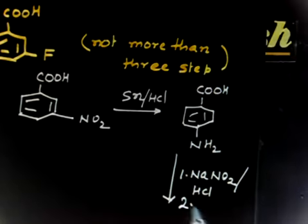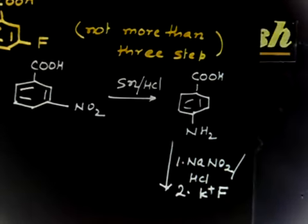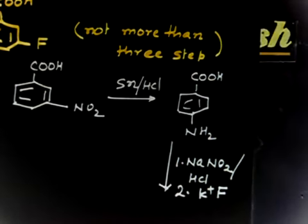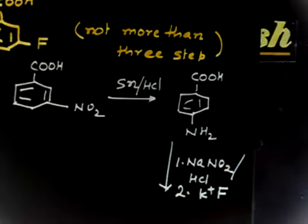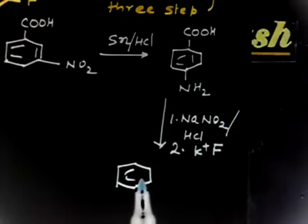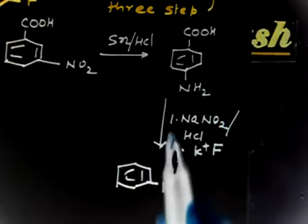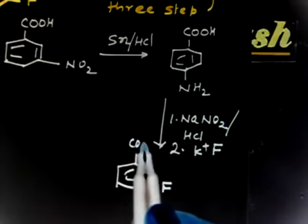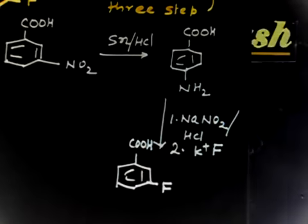And that Diazotium-Cation if reacted with KF, K plus F minus, or you can also use HBF4, you will have finally fluorine here and then you will have COOH. Are you getting it?